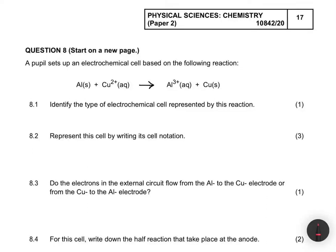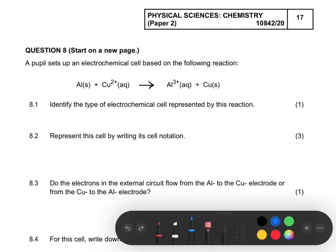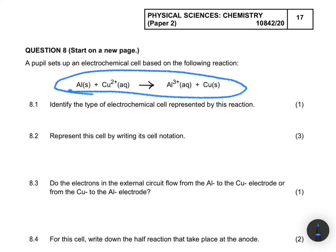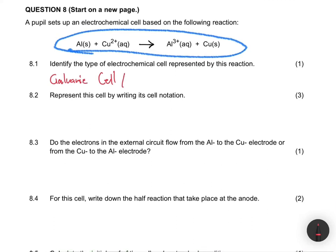A pupil sets up an electrochemical cell based on the reaction: aluminium plus copper 2+ ion giving aluminium 3+ ion plus copper. Question 8.1 asks us to identify the type of chemical cell. We only have two options: galvanic cell or electrolytic cell. Clearly this is a galvanic cell. For an electrolytic cell the electrodes are not reacting, so you cannot have such an equation. The answer for 8.1 is galvanic cell, also called a voltaic cell.